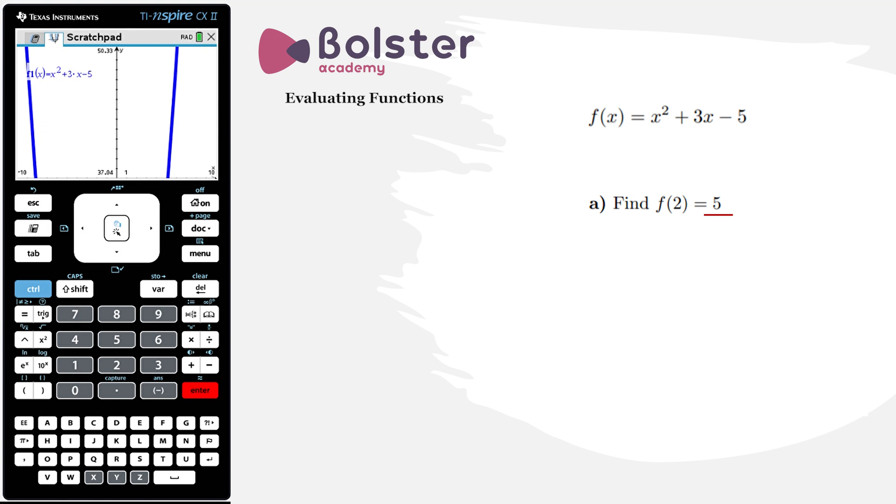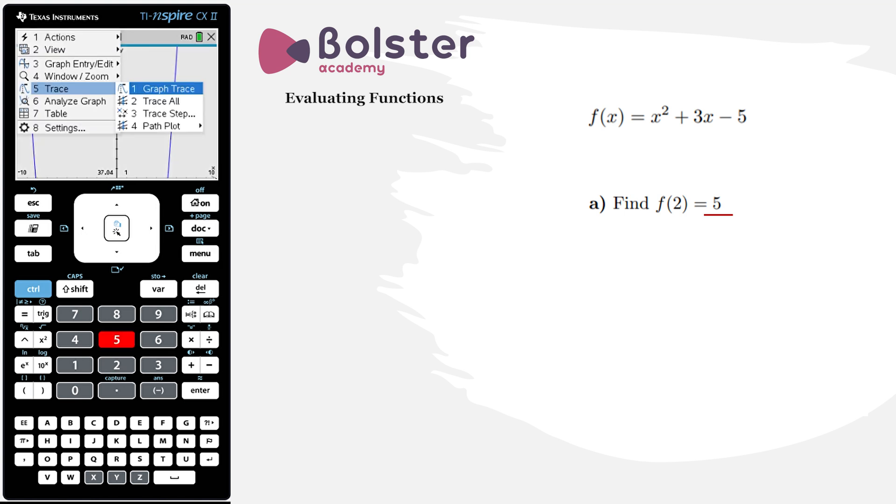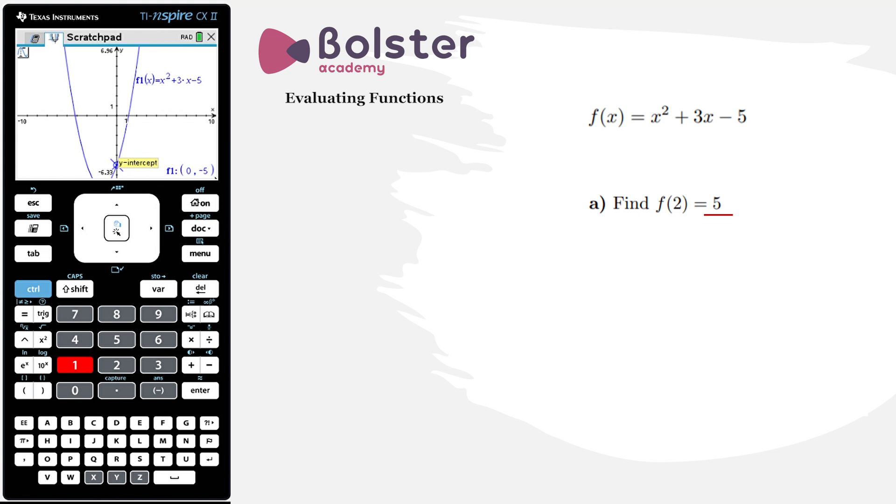Now at the moment the graph isn't particularly conveniently displayed. We might want to recenter our display but we're not too concerned about that for the moment. What we want to do now is find the actual value that we're interested in, f(2). So I hit menu again. I'm going to hit option number five which is trace, option number one which is graph trace. And here we go. Up pops a point which is the y-intercept on the function at (0, -5).